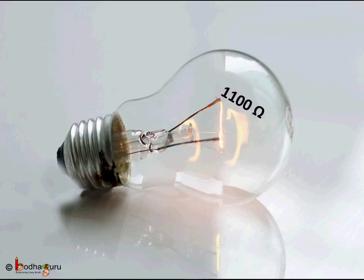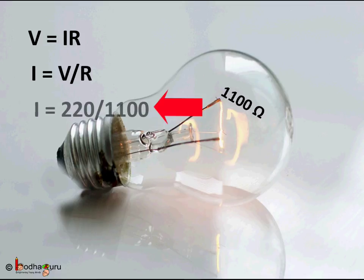So according to Ohm's law, V equal to IR or I equal to V by R. So here V is 220 volts, the standard voltage of plug points in our homes in India. I equal to 220 by 1100 which is equal to 0.2 amps. So 0.2 ampere current flows through the electric bulb.